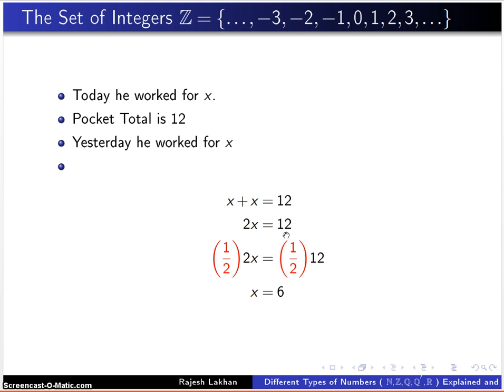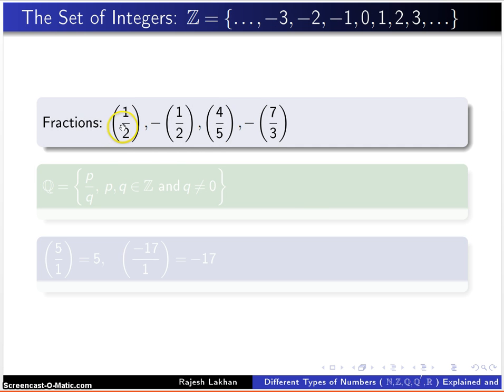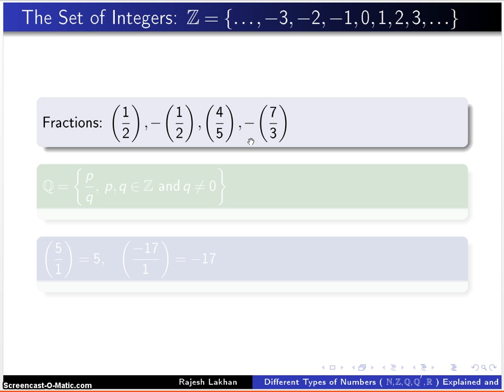And again this is very easy to solve. We just multiply by a half. However, a half, where did a half come from? All we have are the set of integers which are negative numbers and positive numbers, so we need to invent a half. Things are getting interesting now. So we invent fractions. We have a half, we have negative a half, we have four-fifths, we have negative seven-thirds. Now we came up with a very neat way to write fractions.